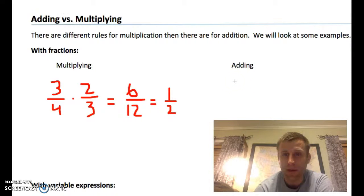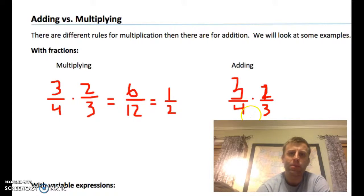With adding, remember, they do have to be like denominators. So, let's say three-fourths plus two-thirds. We need to get a common denominator, be twelve, so multiply by three, multiply by four, get a common denominator, twelve.